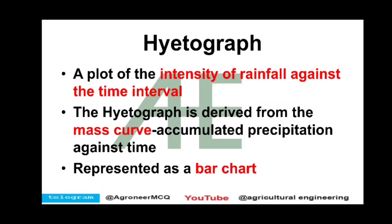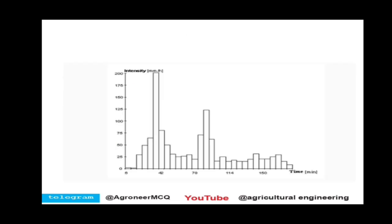A Hytograph is a plot of the intensity of rainfall against the time interval. When there is a graph of intensity of rainfall against time interval, it is called a Hytograph. The Hytograph is derived from the mass curve of accumulated precipitation against time, and it is represented as a bar chart. In this graph, intensity is on one axis and time interval is on the other axis.